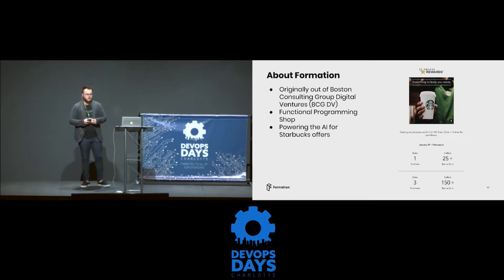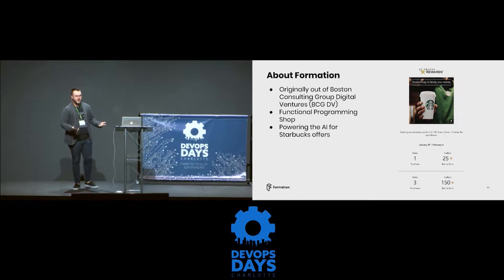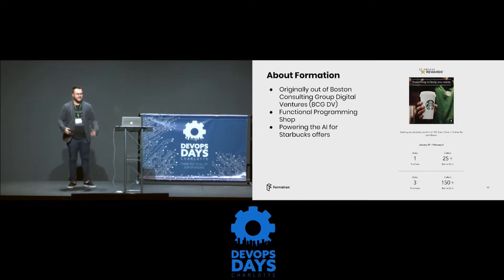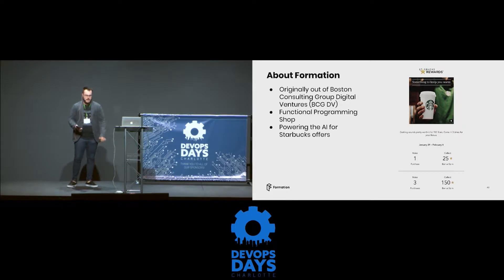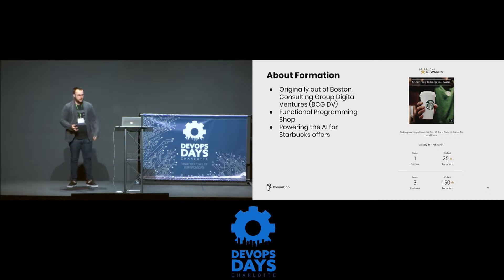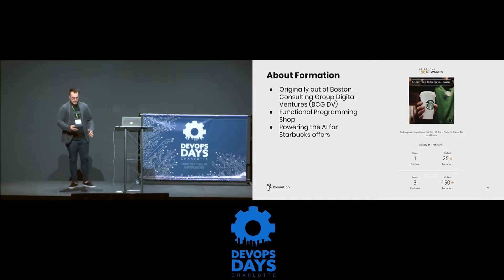Formation is a pretty solid company to work for. We're a functional programming shop, so all of our engineers either write in Haskell or a functional style of Scala. We also happen to be the brains powering the AI offers for Starbucks — if you got an email about that about five minutes ago, because we just sent out the offers today, that's us.